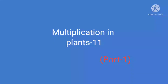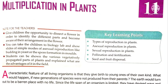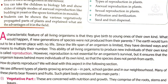Today we start chapter 11, Multiplication in Plants, on page 159 and 160. Let us imagine that if there is no new production or multiplication of organisms taking place in the world, what would happen in the future? There would be no organisms that could survive in this world — the earth would become a barren place. So there is a need for multiplication of organisms, a process called reproduction.